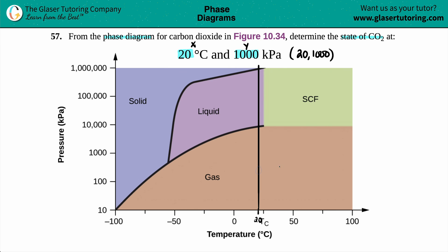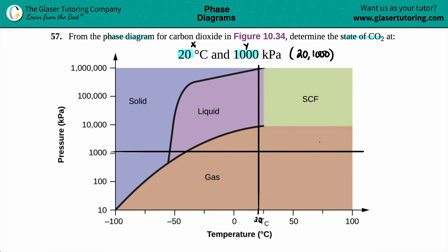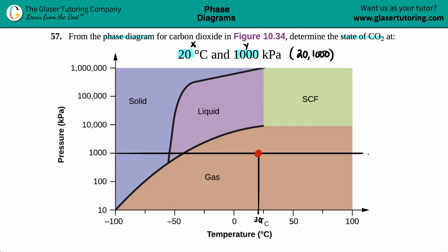Shifting it over a little bit, now we go to the y-axis to get 1000 — right here, right on the money. Drawing a straight line across, where those two lines cross is the phase. I'll get rid of the construction lines now.